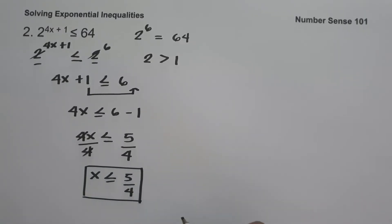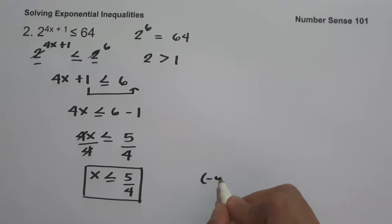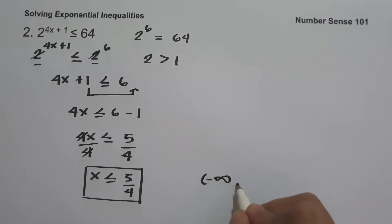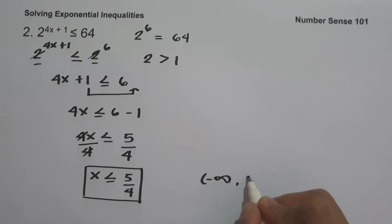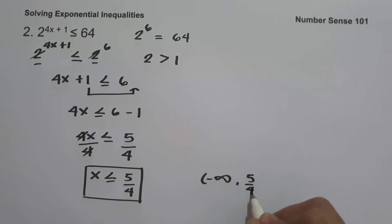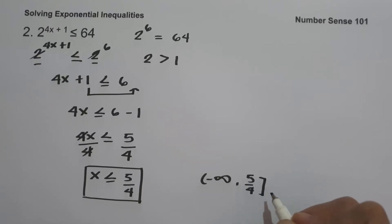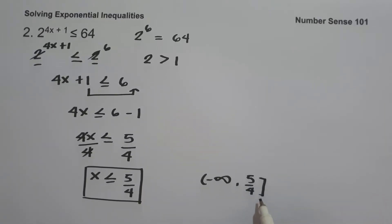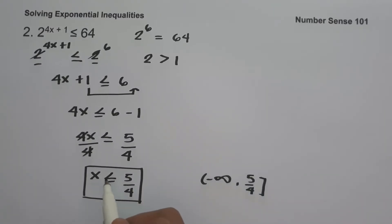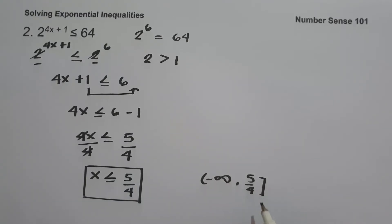Therefore, the solution set is from negative infinity up to 5 over 4. We use a bracket because our inequality symbol is less than or equal to, meaning 5 over 4 is included in our solution. And this will be our answer.